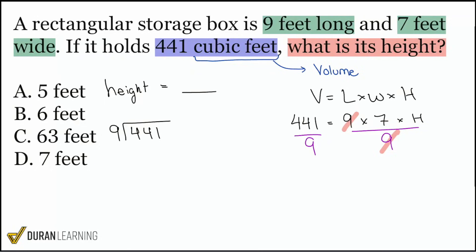Nine goes into 44, that'll be four times. And we subtract 36. Once we subtract, we end up getting eight, dropping the one, and we get 81. Nine goes into 81, that'll be nine times. So boom. This division right over here, everyone, gives us 49. And then that's going to be equal to seven times H.